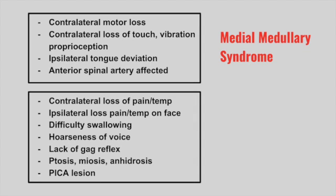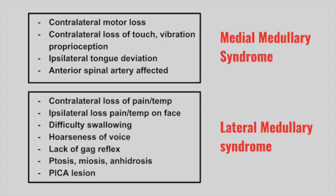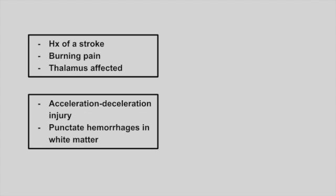Next is a patient with contralateral loss of pain and temperature, ipsilateral loss of pain and temperature on the face, difficulty swallowing, hoarseness of voice, lack of gag reflex, and Horner's syndrome — a PICA lesion. This is lateral medullary syndrome. The spinothalamic tract and cranial nerves 9 and 10 are affected, along with the cervical sympathetic chain causing Horner's syndrome. Next is a patient with a history of stroke presenting with burning pain; the thalamus is affected. This is post-stroke pain syndrome.